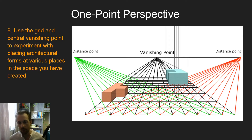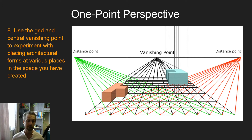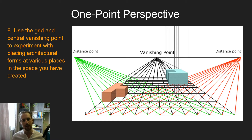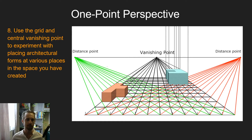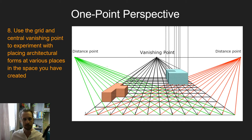Once we have this grid, we can use it to locate architectural objects. What you'll notice with most of these projection systems is that their speciality is architecture — if you draw a person, it's very hard to tell what type of spatial system you're using because there are no straight lines. These projection systems are most obvious when drawing architectural spaces.